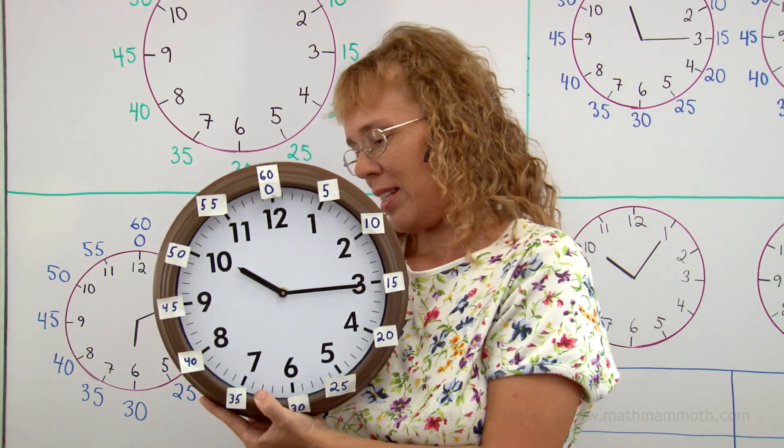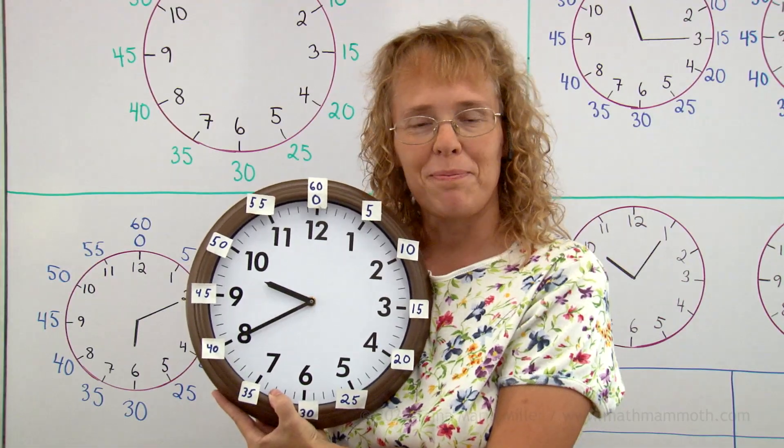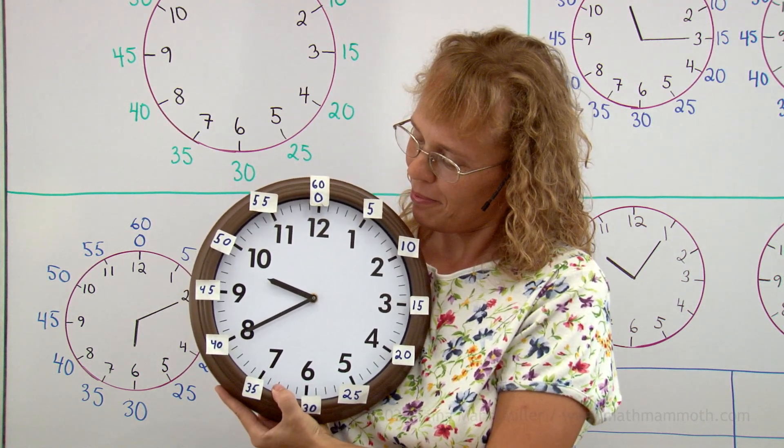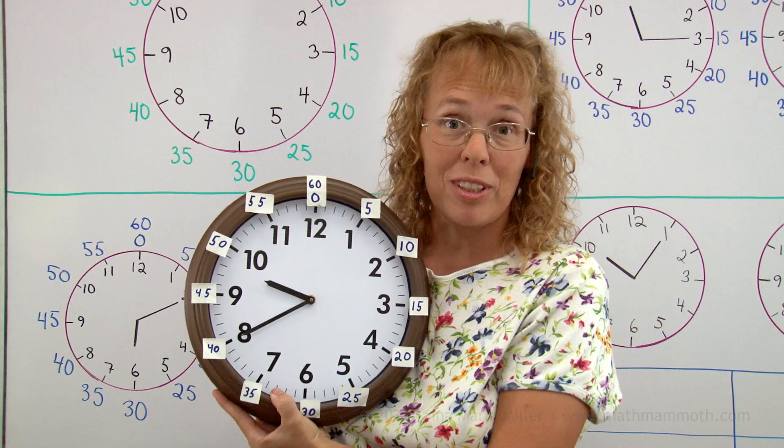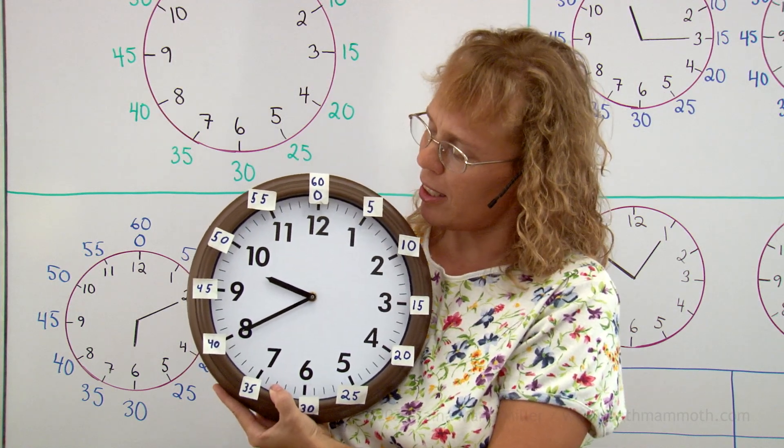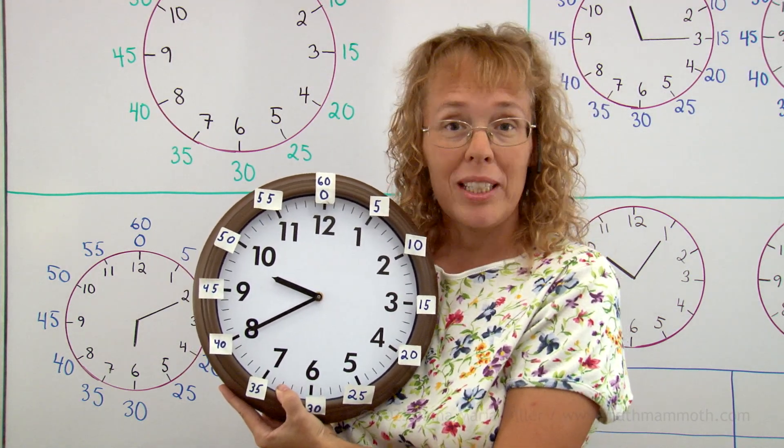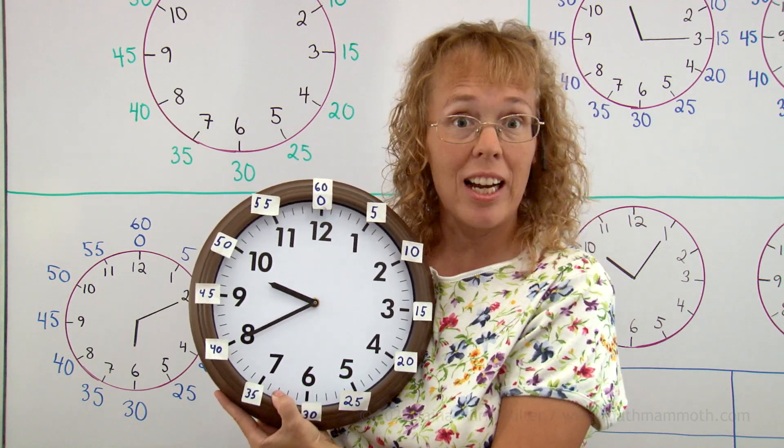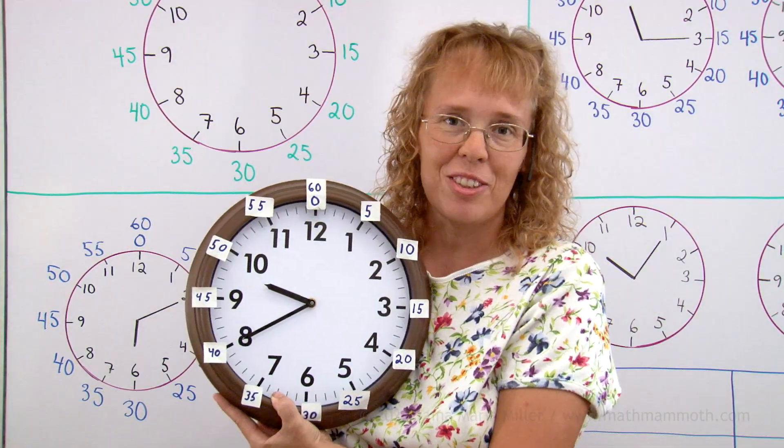And one more. This one. What time is it? The minute hand is clearly pointing to 40 minutes. But what about the hour hand? It is between 9 and 10. But it is not yet 10. So we say 9 hours and 40 minutes. Or 9.40.